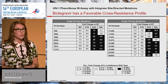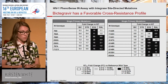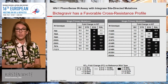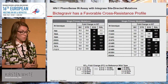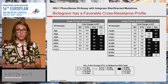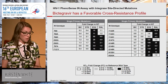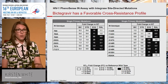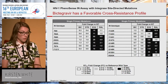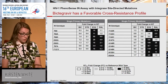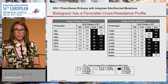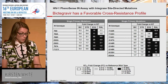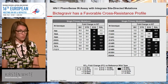When we developed Bictegravir, we screened hundreds of molecules, and in that screening process we did include integrase-resistant isolates. Bictegravir has a favorable cross-resistance profile, and we engineered that in. Here I have site-directed mutations of all the primary single mutations you see in integrase. The color coding is based on the monogram assay — this is all monogram assay phenotypic data — where white means sensitive.